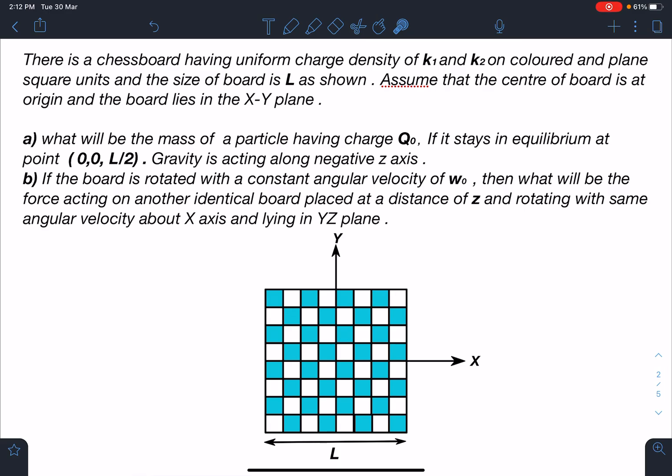The first part is: what will be the mass of a particle having charge Q₀ if it stays in equilibrium at point (0, 0, L/2)? Gravity is acting along the negative Z axis.